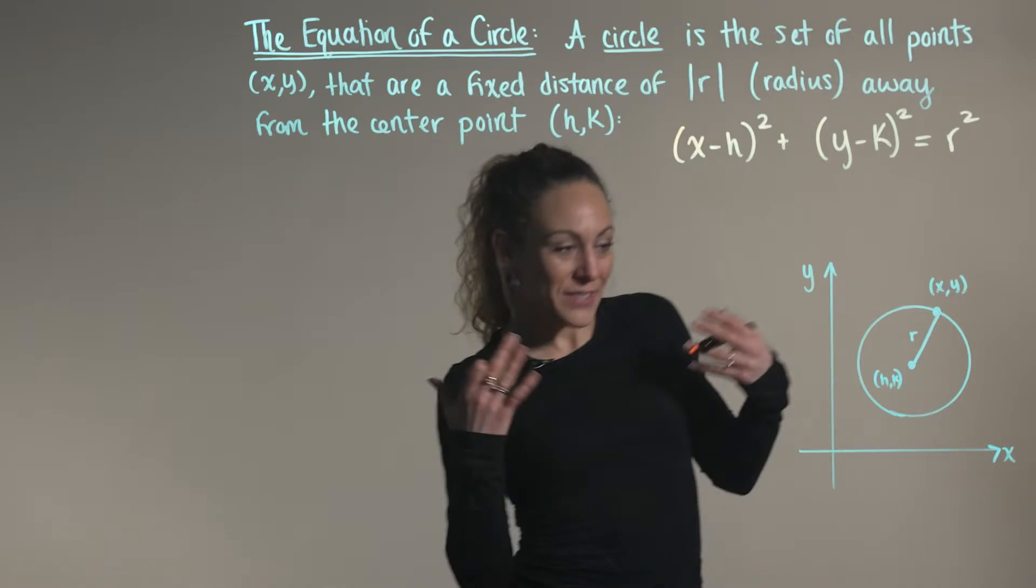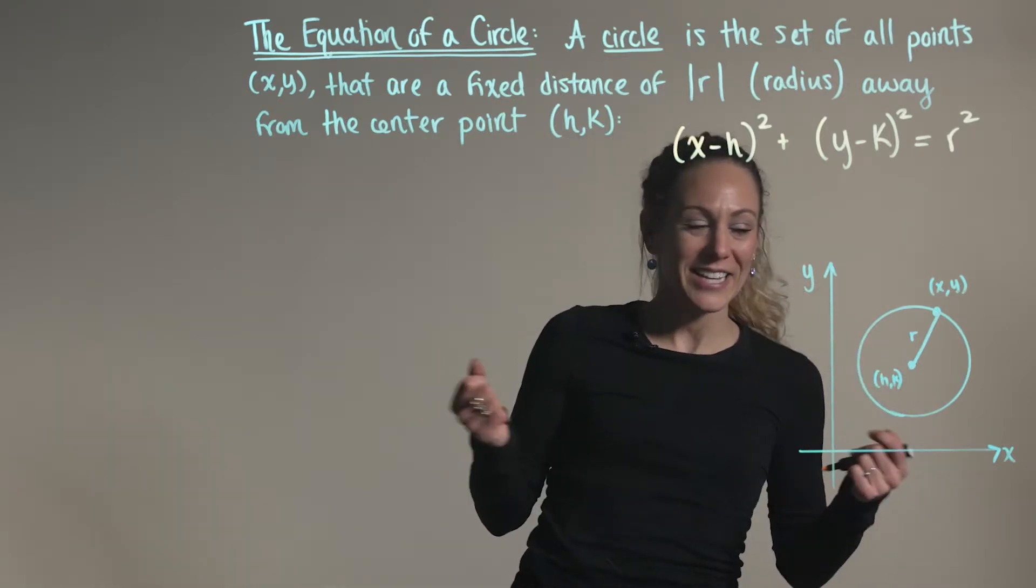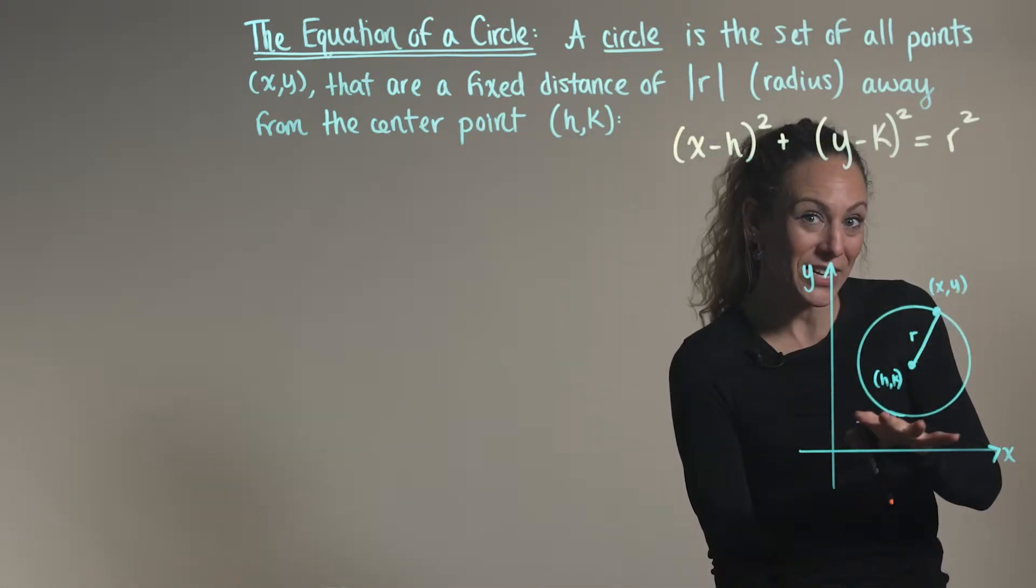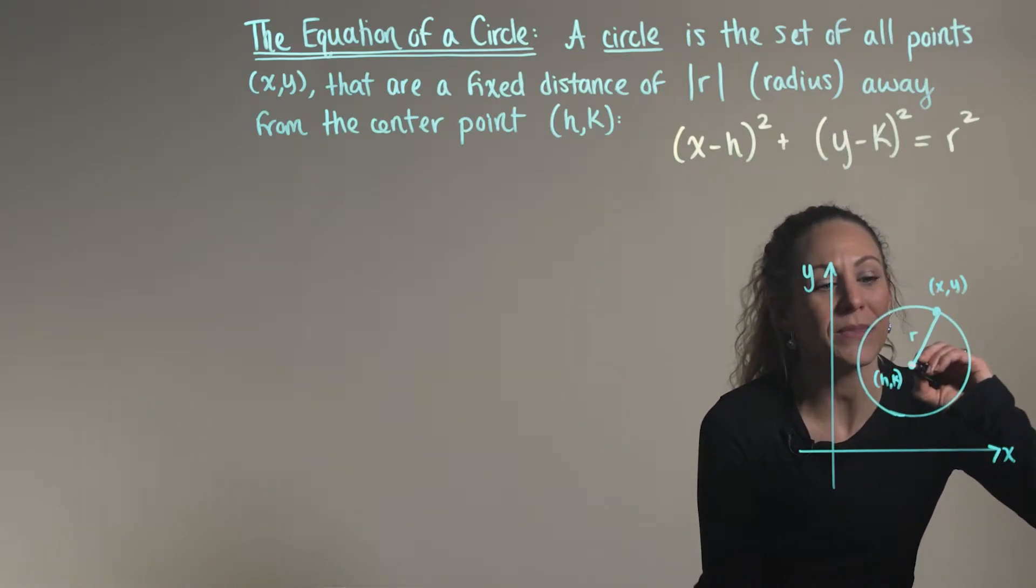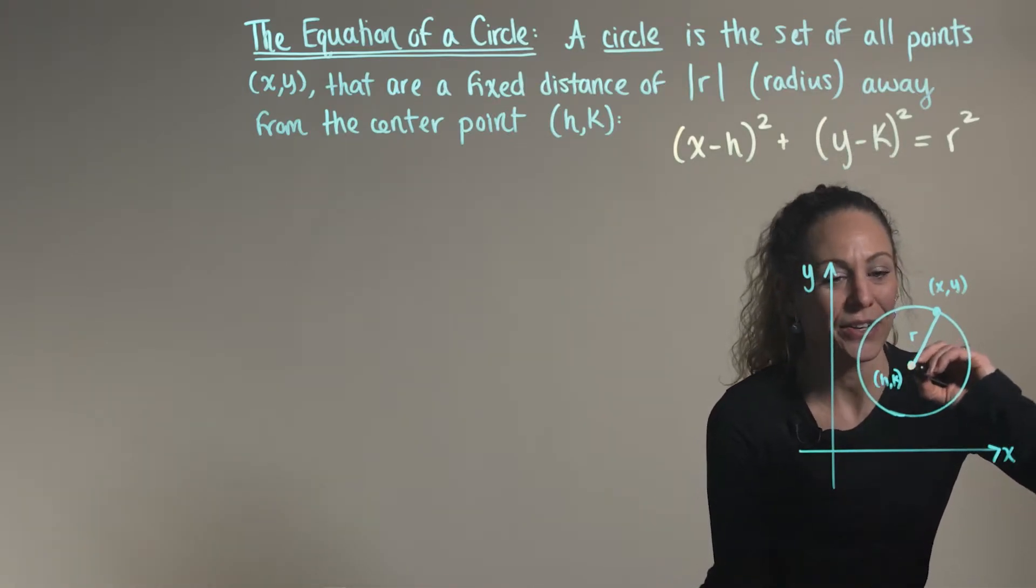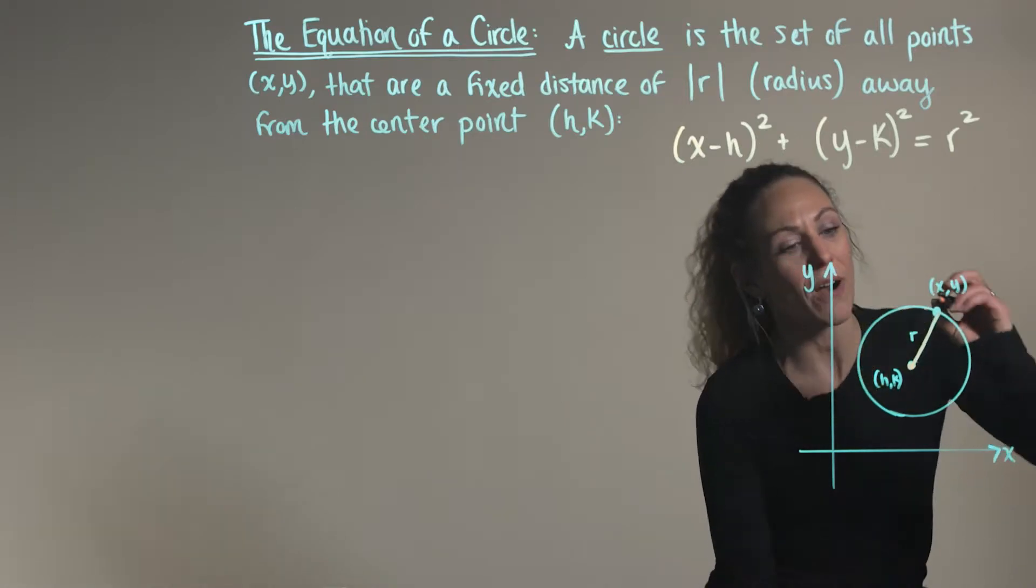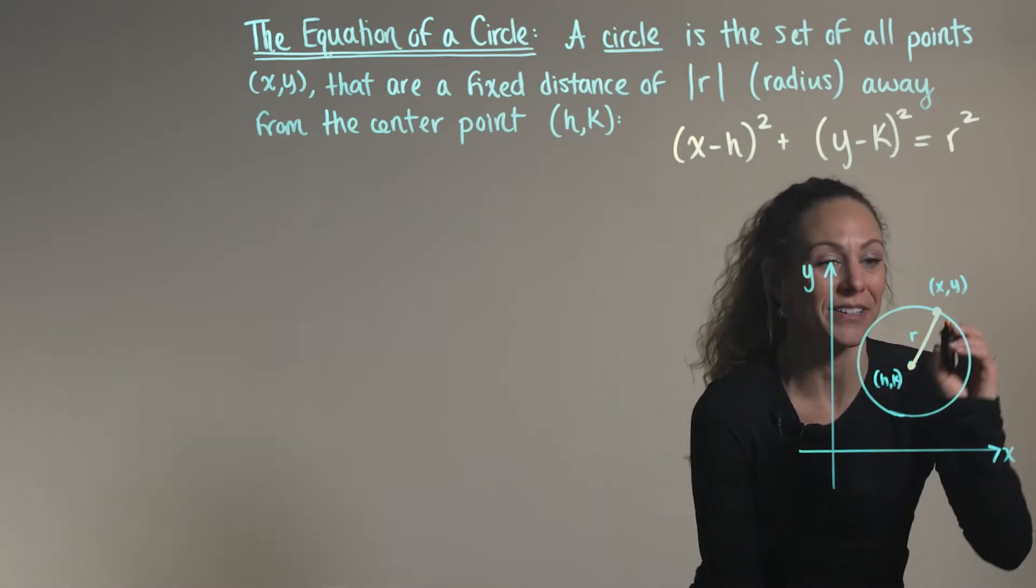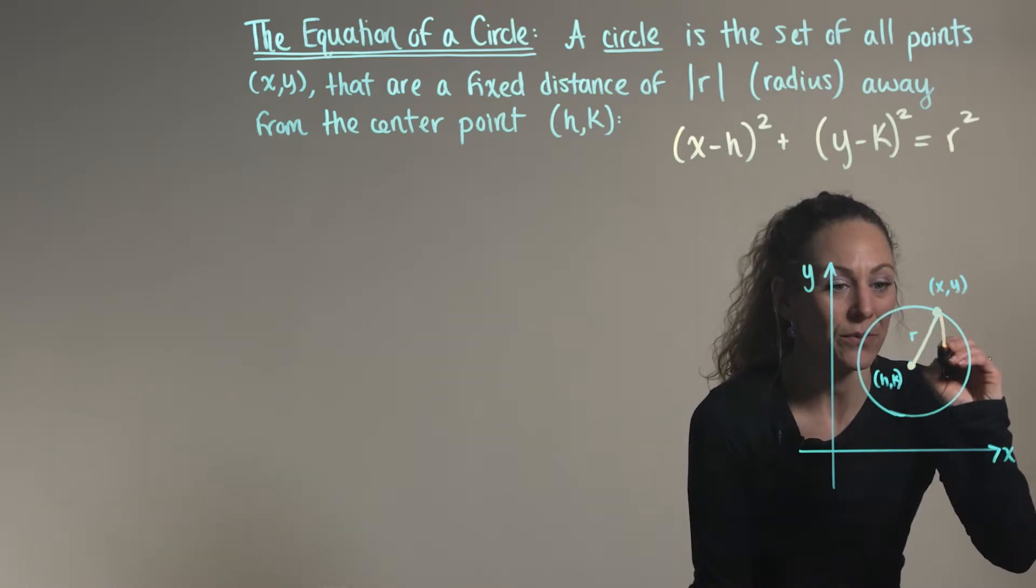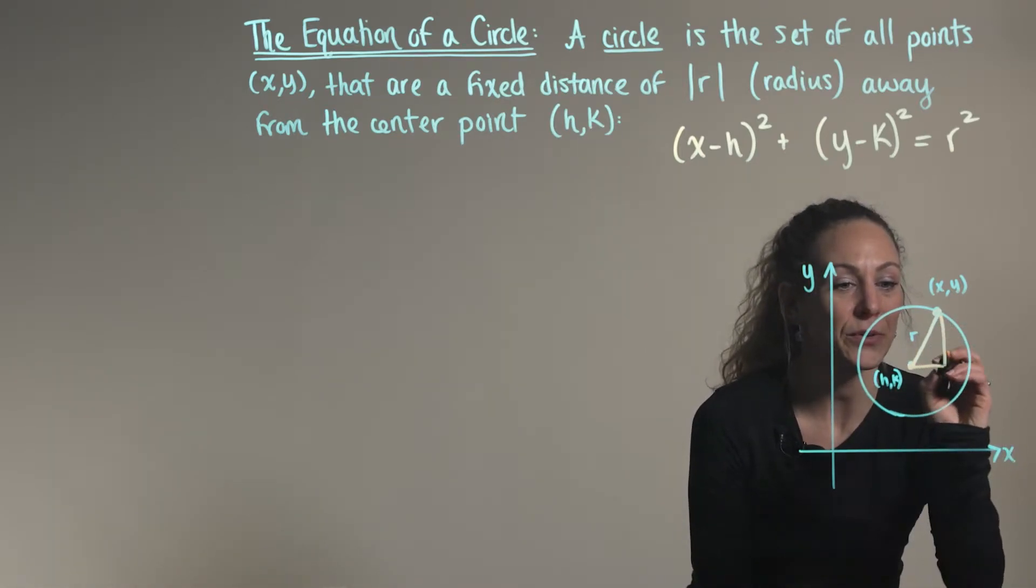So let's see how this relates to Pythagorean's identity by establishing a right triangle on our circle. Notice here, from the center point at (h, k) to any point (x, y) on the circle itself, we have our radial length r. And we can create ourselves a right triangle using those points.